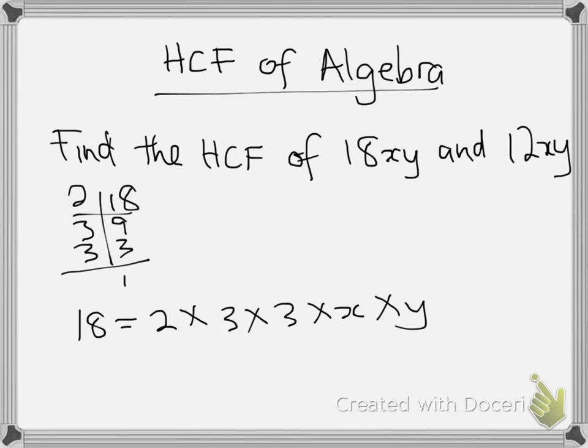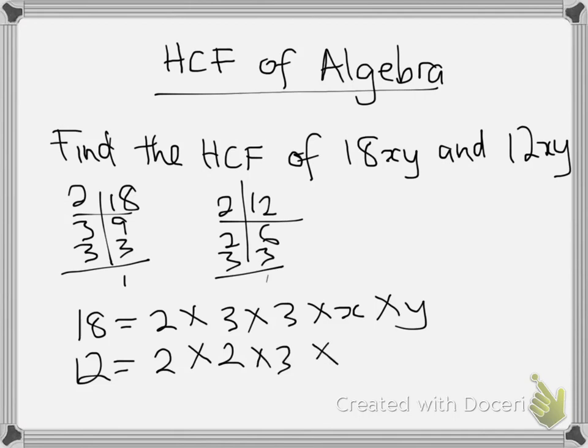For 12, we do the same. 2 into 12 is 6, 2 into 6 is 3, 3 into 3 is 1. Therefore, 12 is equal to 2 times 2 times 3 times x times y.